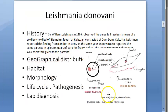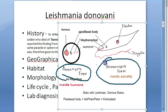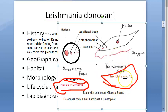Coming to the morphology — Leishmania donovani has two forms: the amastigote form, which has no flagellum, and the promastigote form, which has a flagellum. That's just two forms — much simpler than Trypanosoma, which is also a hemoflagellate and has more forms. The amastigote form is found inside human beings; the promastigote form is found inside the sandfly.